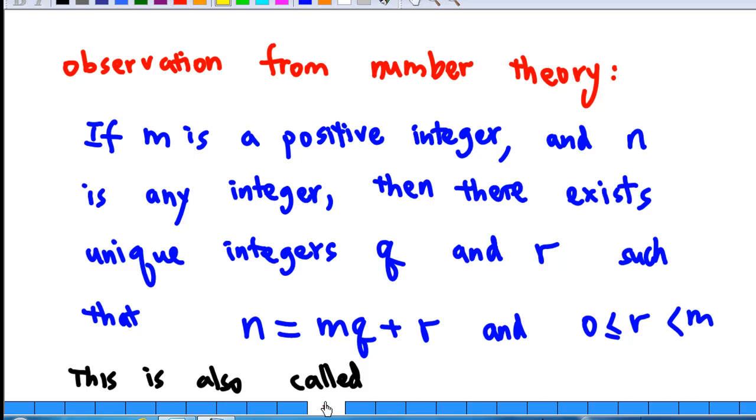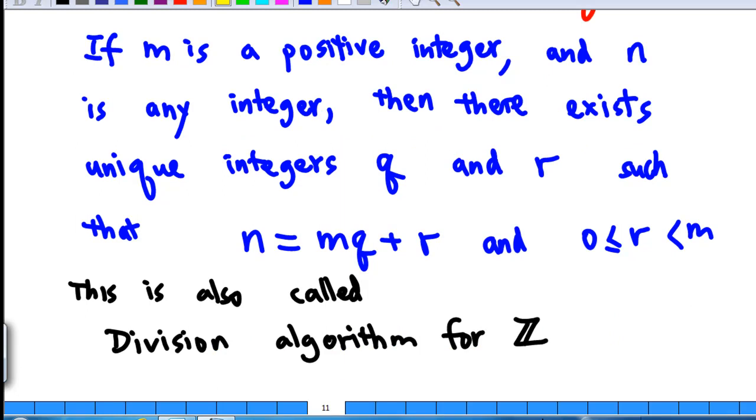It says that if m is a positive integer and n is any integer, then there exist unique integers q and r such that n equals m times q plus r, where r is a number greater than or equal to zero and less than m. This is also called the division algorithm for integers.